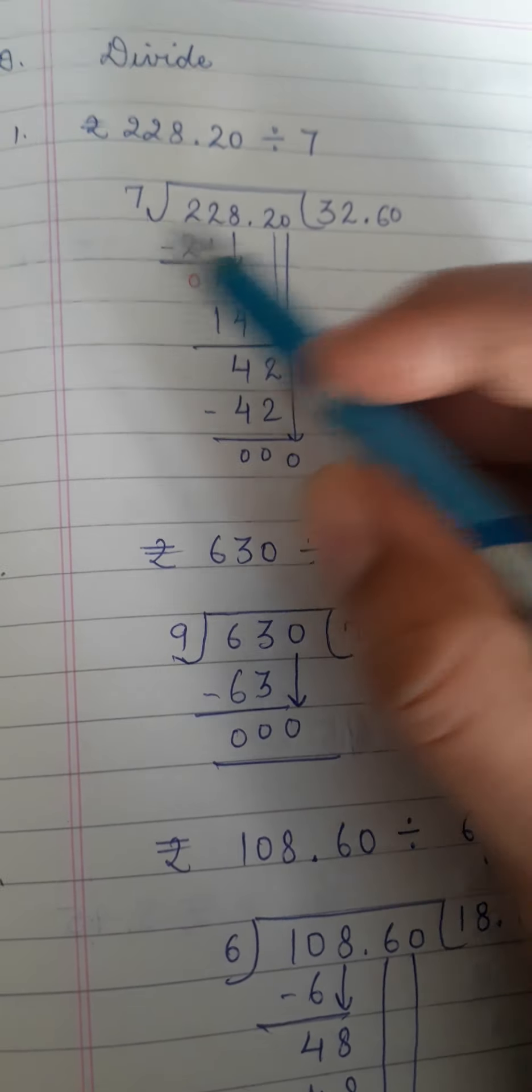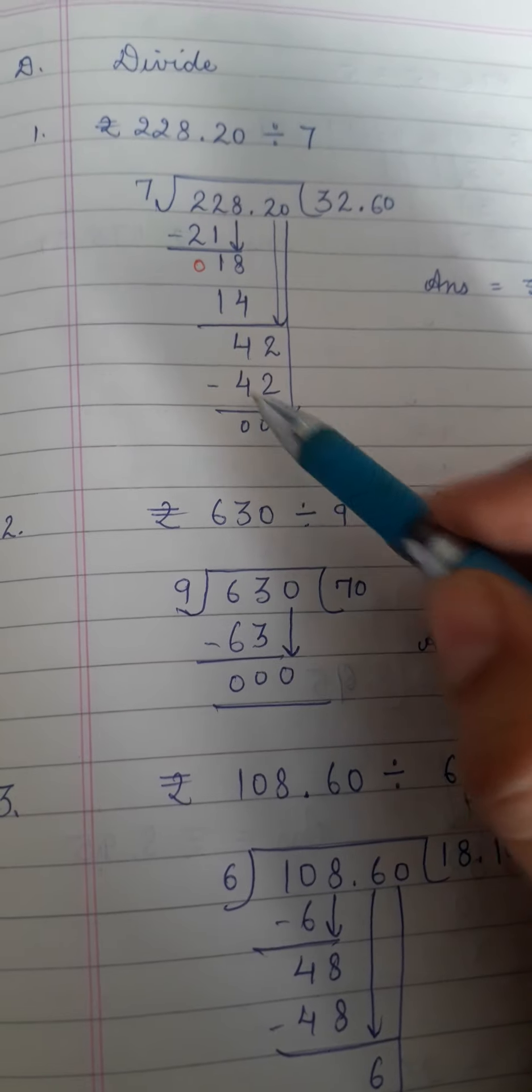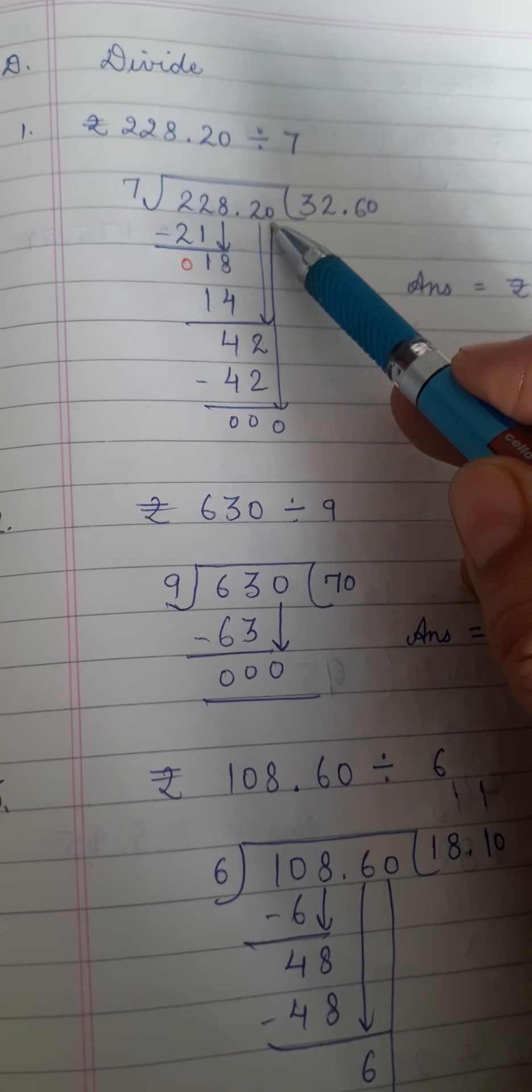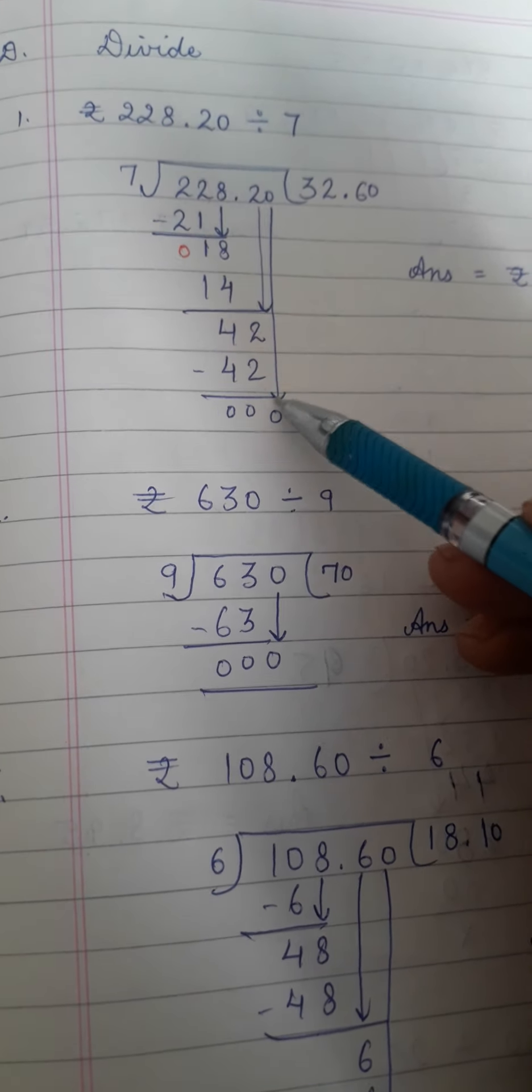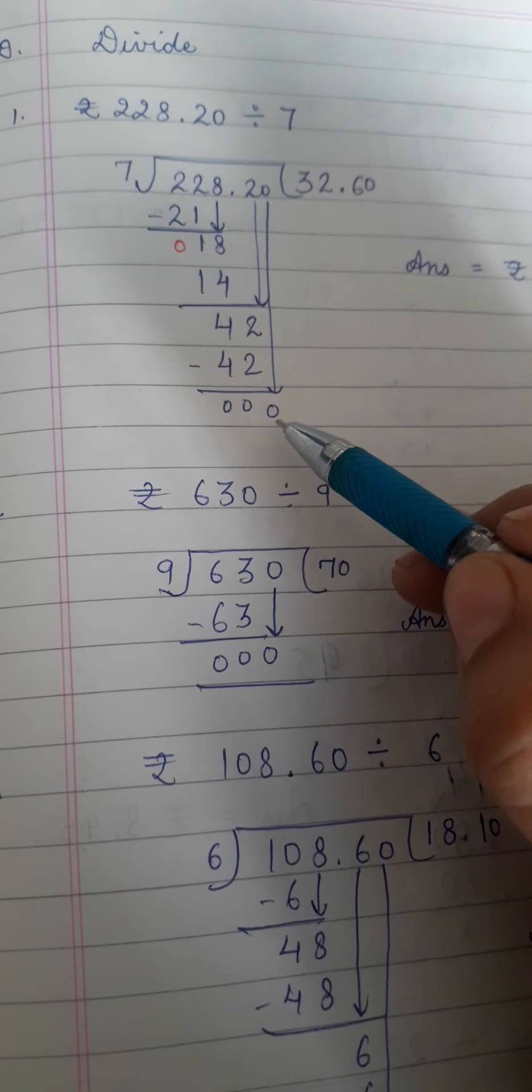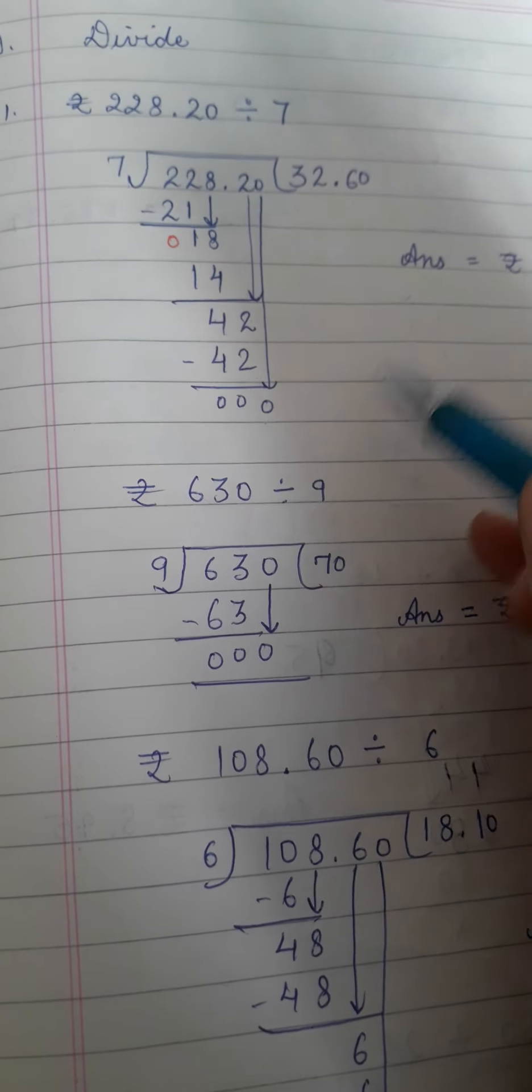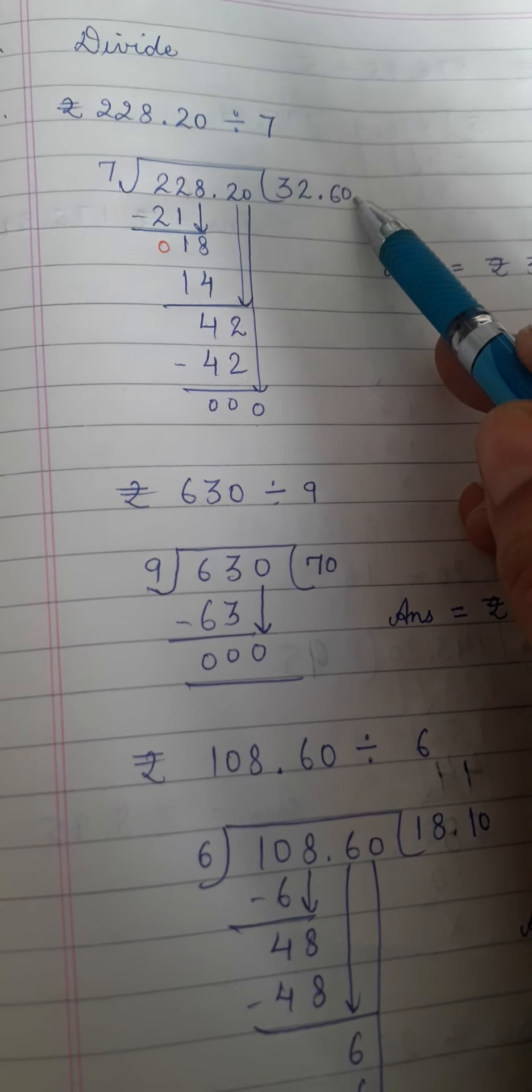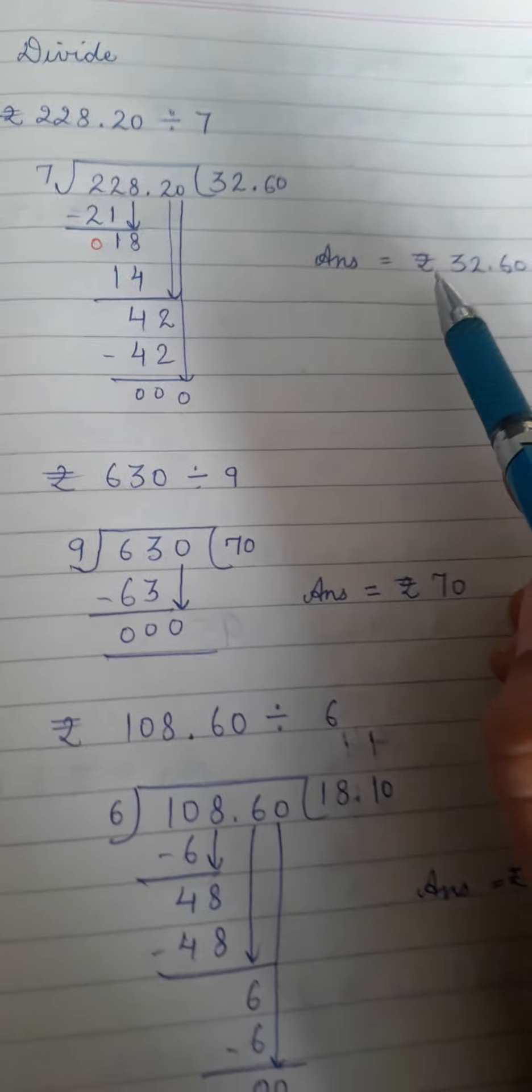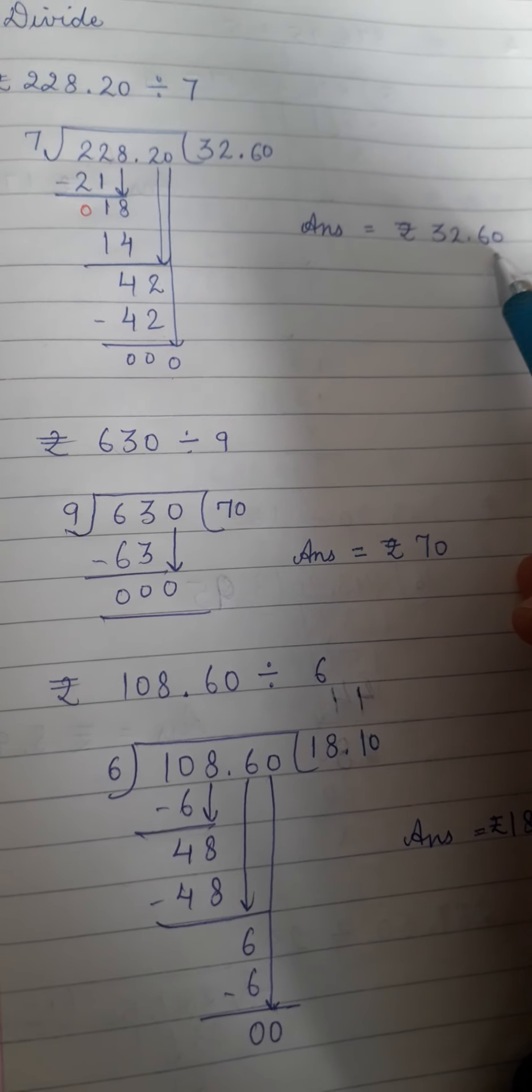7 sixes are 42. Minus gives 00. Now we have 0 left on top. So you bring down 0. You cannot divide 0 by 7 in the table of 7. So you will put 0 in the question as it is. So your answer is rupees 32.60 paisa.